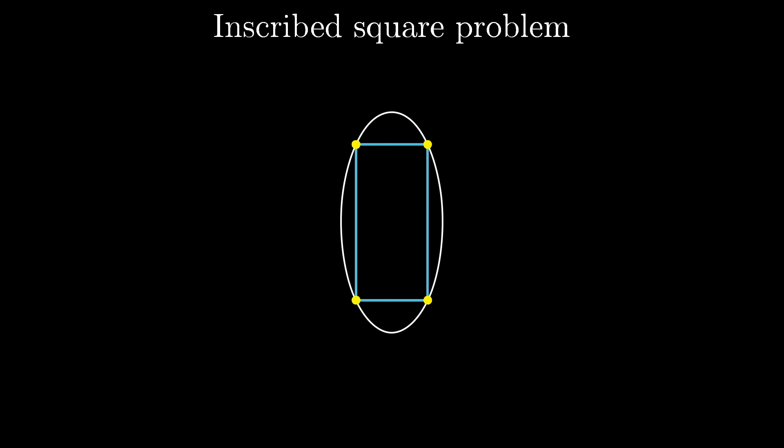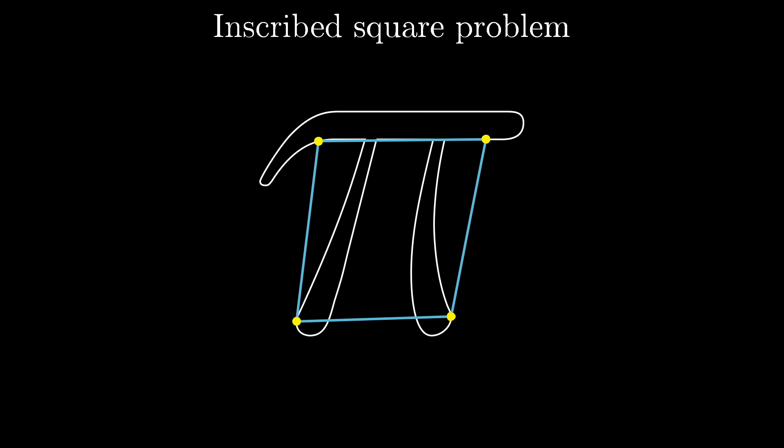If your loop was instead an ellipse, it's still pretty easy to find an inscribed square. The question is whether or not every possible closed loop, no matter how crazy, has at least one inscribed square. Pretty interesting, right? I mean, just the fact that this is unsolved is interesting, that the current tools of math can neither confirm nor deny that there's some loop with no inscribed square in it.